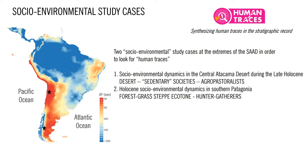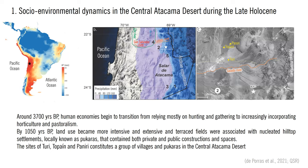In order to look for human traces, I selected two socio-environmental case studies at the extremes of the South American Arid Diagonal, in terms of environmental conditions and human lifeways. The first one is focused in the Atacama Desert during the late Holocene, including sedentary societies. In the central Atacama Desert, around 3,700 years BP, human economies began to transition from hunting and gathering to increasingly incorporating horticulture and pastoralism during the formative period.